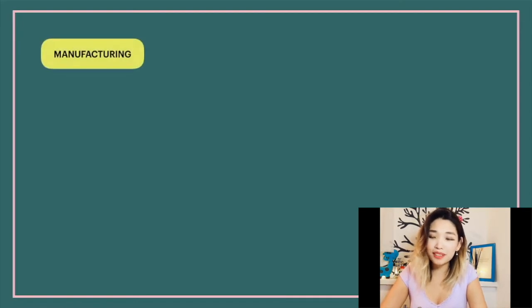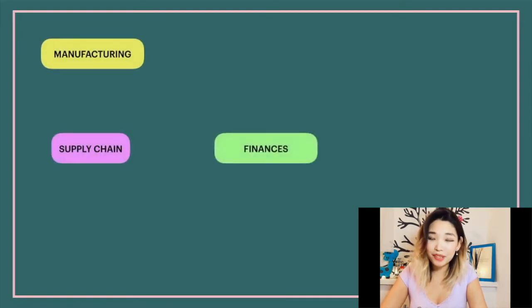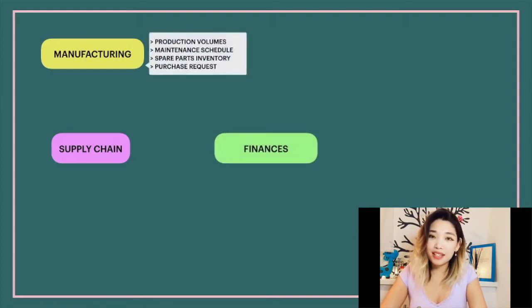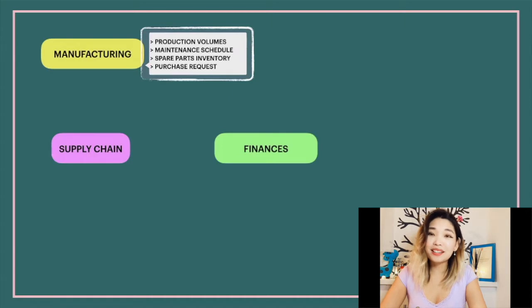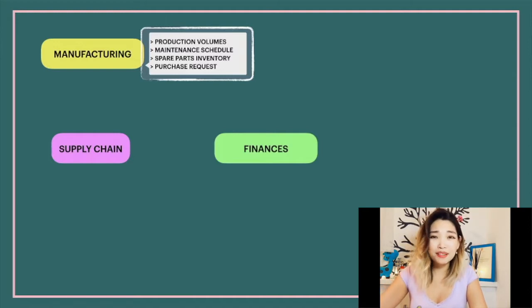Let's consider a simple example of a manufacturing organization. Let's say this organization has just a few departments: manufacturing, supply chain, and finance. In manufacturing, data is generated within the department — such as production volumes, maintenance schedule, spare parts inventory, and purchase requests. We will call this data at rest, meaning inactive data stored on manufacturing departmental network drives, database servers, or any other digital form like spreadsheets or other documents.